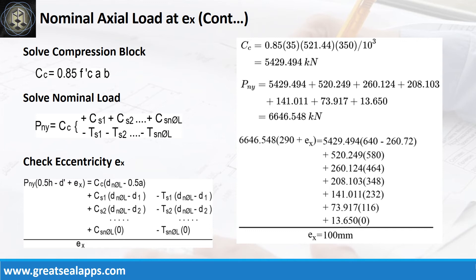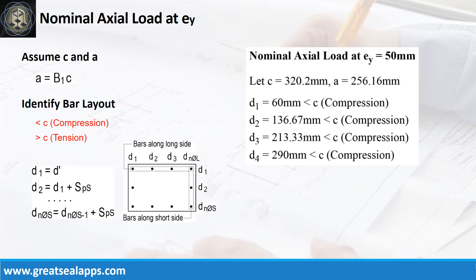Follow the given computations for the final check of eccentricity at x-axis of 100 mm. To get the nominal load at eccentricity sub y equals 50 mm, let neutral axis C equals 320.2 mm and height of stress block A equals 256.16 mm.